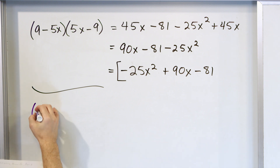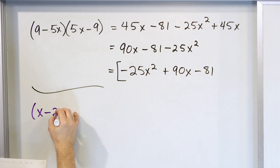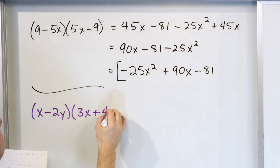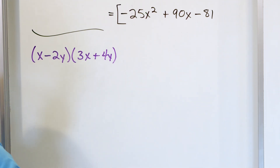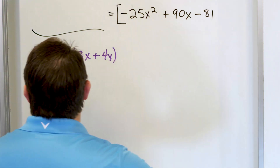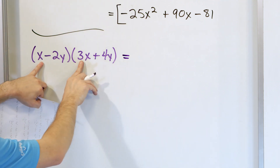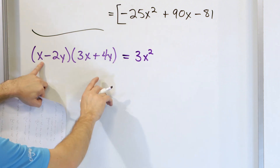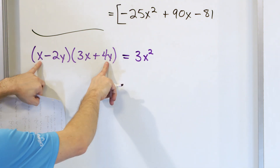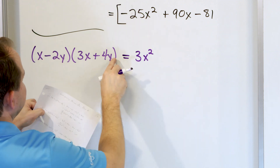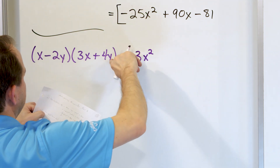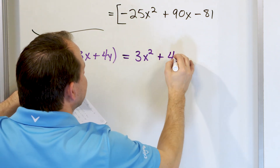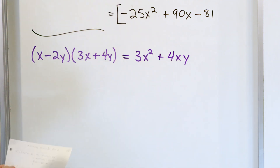What if we have (x - 2y)(3x + 4y)? Using first, outer, inner, last: the first terms, x times 3x, give 3x squared — we add the exponents. The outer terms: x times 4y gives 4xy, because we have two variables mixed in.